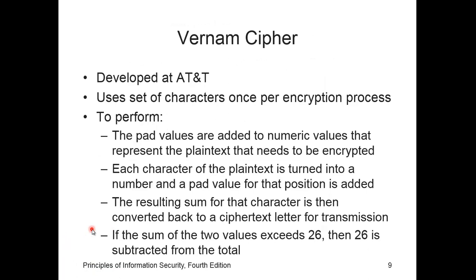Also known as the one-time pad, the Vernam cipher was developed at AT&T and uses a new set of characters whose value is added to the block of text. The resulting sum is then converted to text. When the two values are added, if the sum exceeds 26, then 26 is subtracted from the total — modulo 26 — and the corresponding results are then converted back to text.